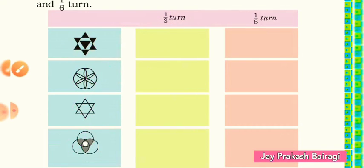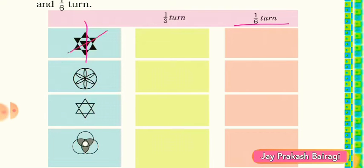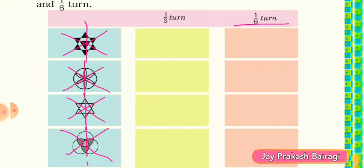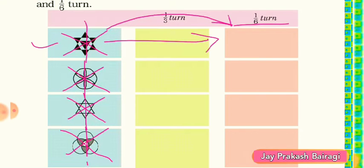You found that all these shapes are looking the same in every one third turn — for that I write 'same' but you will draw the pictures. Now come to one sixth turn. The first thing to understand is you have to find the one sixth turn, and for that you have to find minimum three symmetry lines of these pictures. I am trying to divide all shapes using minimum three symmetry lines.